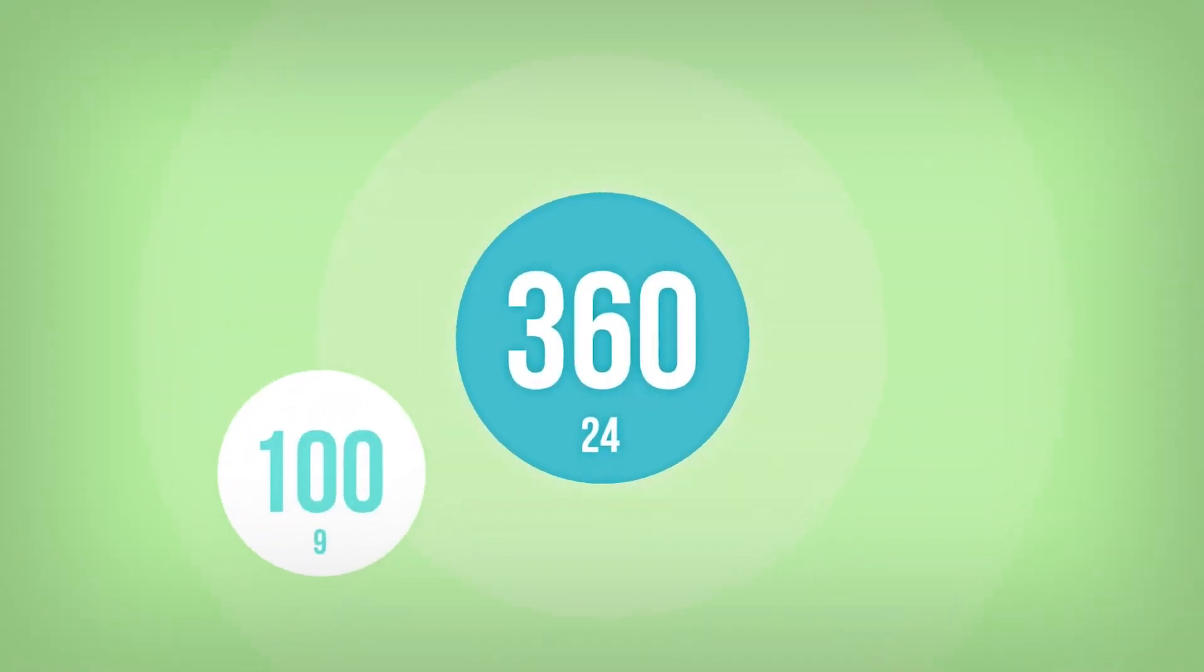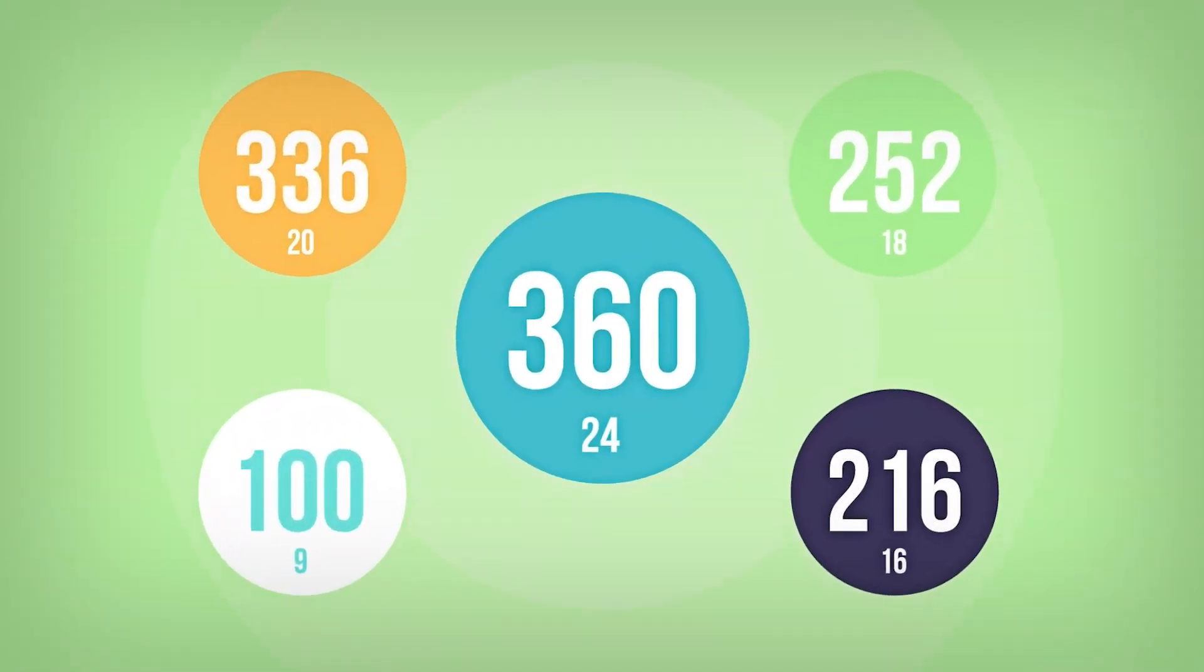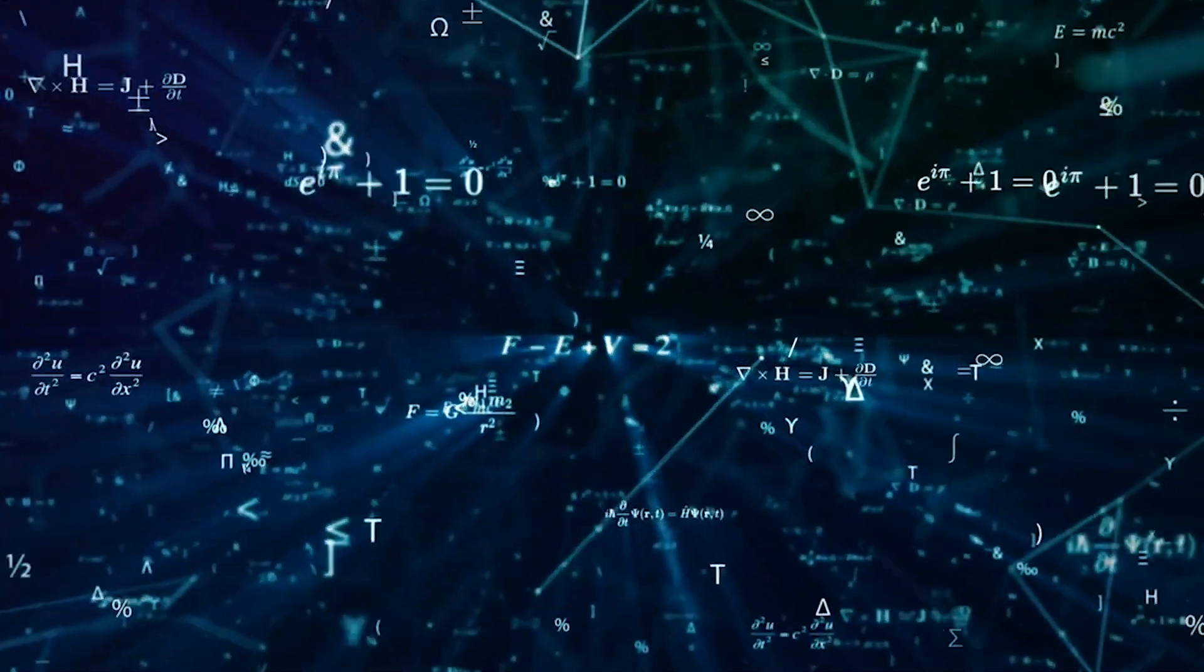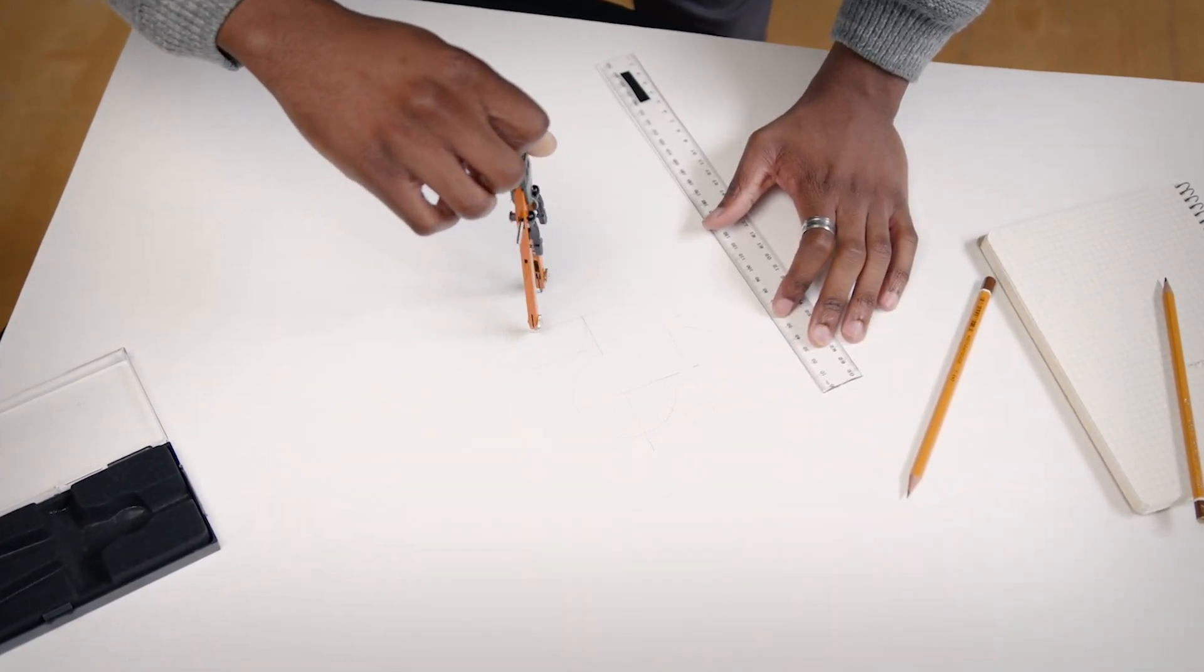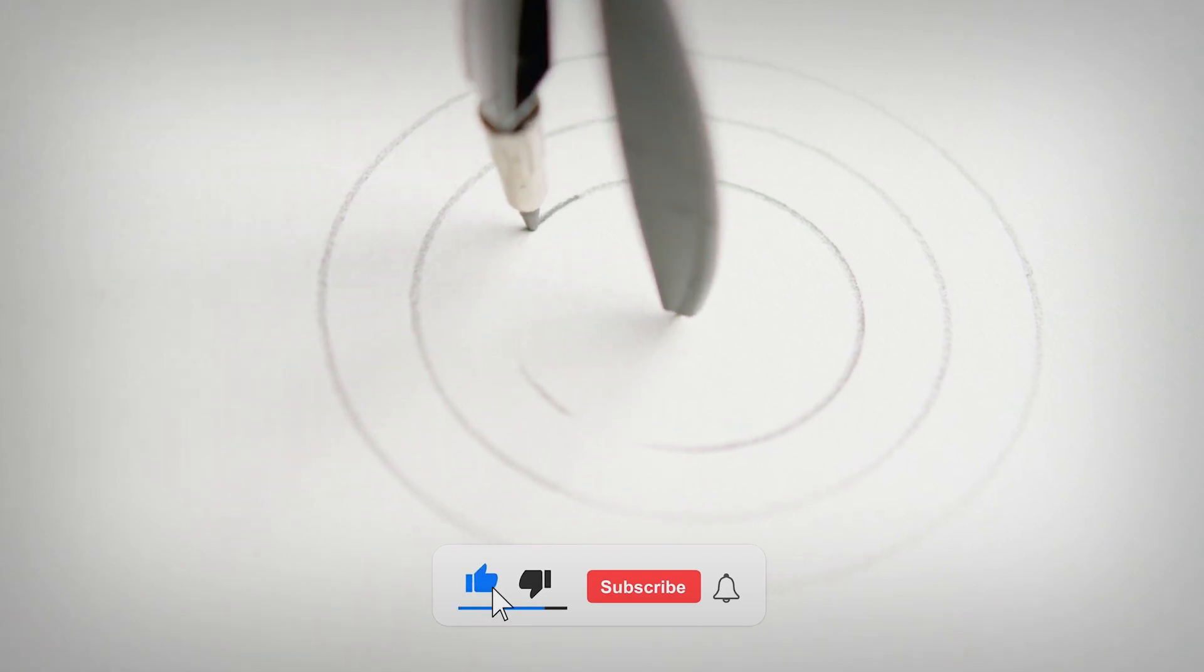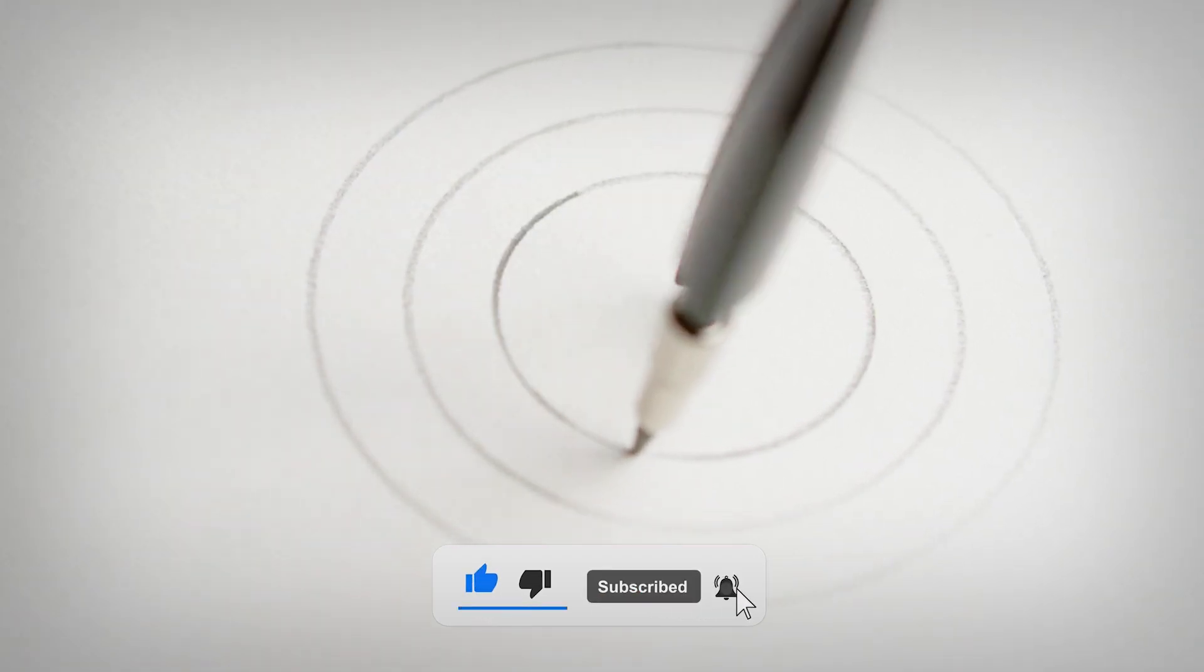The choice wasn't a random selection but rather a well-thought-out decision. It's a reflection of mathematical convenience, practicality, and pervasive influence in our daily lives. So, the next time you see a circle, remember, there's more to it than meets the eye.